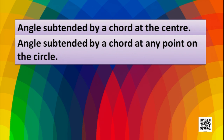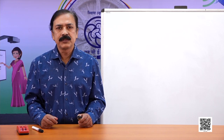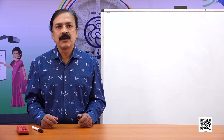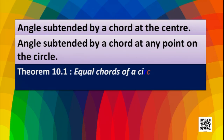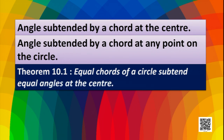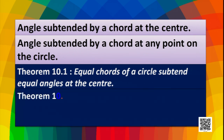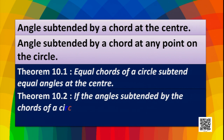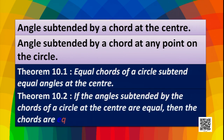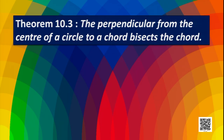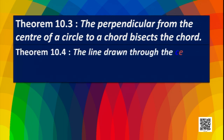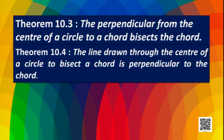We also have terms like angle subtended by a chord at the center and angle subtended by a chord at any point on the circle. Relating to these terms we have theorems. The first theorem says equal chords of a circle subtend equal angles at the center, and its converse: if angles subtended by chords at the center are equal, then the chords are equal. The next theorem states the perpendicular from the center of a circle to a chord bisects the chord, and its converse: a line drawn through the center to bisect a chord is perpendicular to the chord.